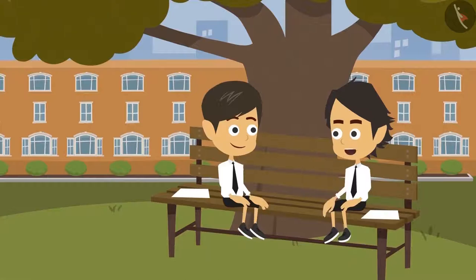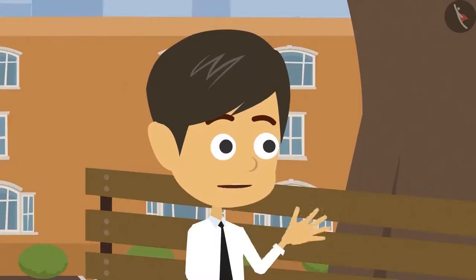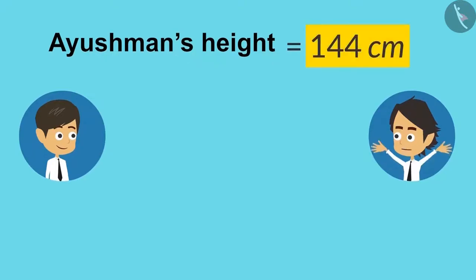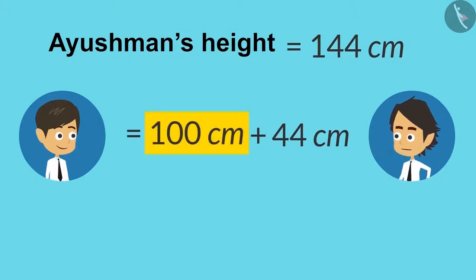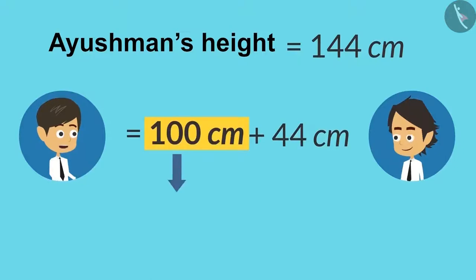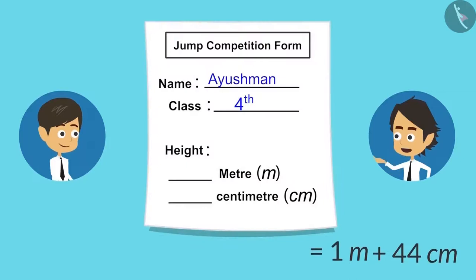So with this information, I can write my height in meters and centimeters. My height is 144 centimeters. Now let's write it like this: 100 centimeters plus 44 centimeters. Now I understand — 100 centimeters equals 1 meter, so we can write 100 centimeters as 1 meter, and now I can write in the form 1 meter 44 centimeters.